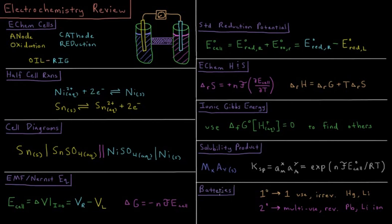Lastly, we briefly discuss batteries, where a primary battery is a single-use irreversible battery like mercury batteries or solid lithium batteries, and secondary batteries are multi-use reversible batteries, things like lead acid batteries and lithium ion batteries which are very prevalent in modern electronics.